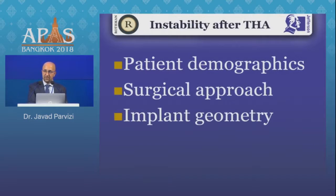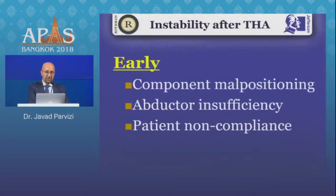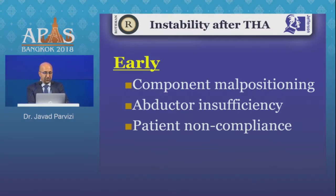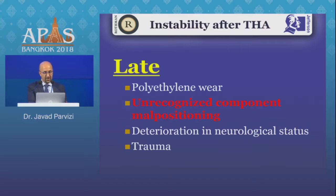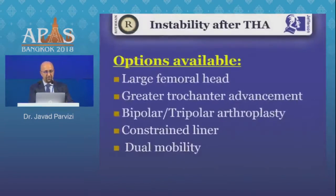The factors that affect dislocation include patient demographics, surgical approach, and implant geometry. Those that occur early happen as a result of component malpositioning, abductor insufficiency, patient non-compliance, and possibly trauma. Late dislocations are usually a result of polyethylene wear — which has fortunately decreased greatly with highly cross-linked polyethylene — unrecognized component malpositioning, deterioration in neurological status such as strokes, and again trauma.